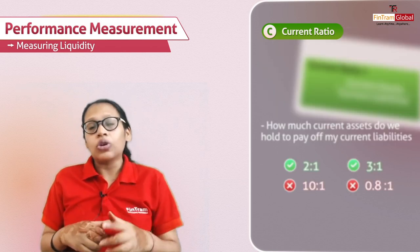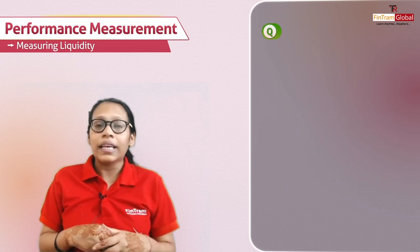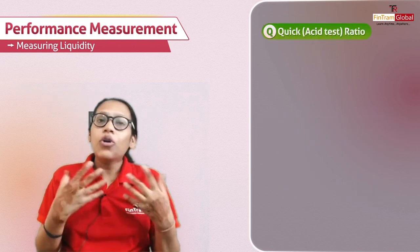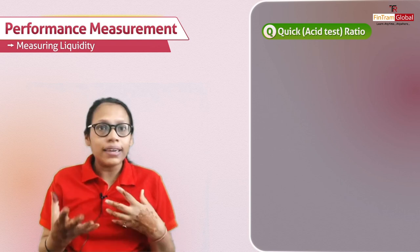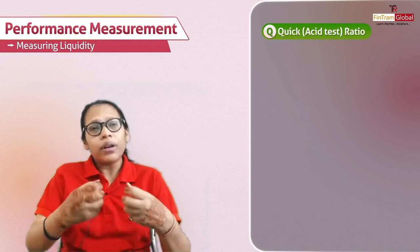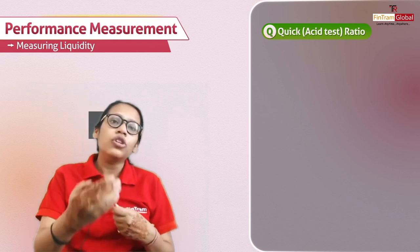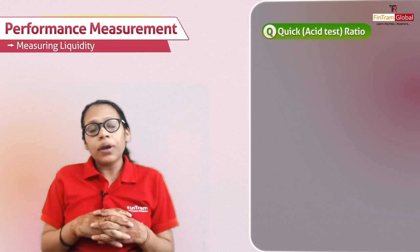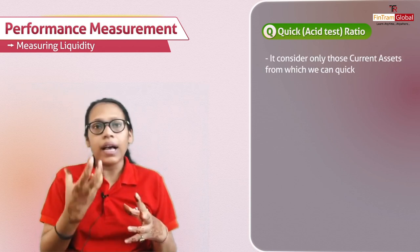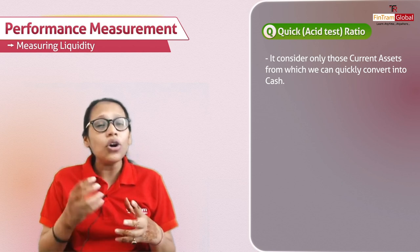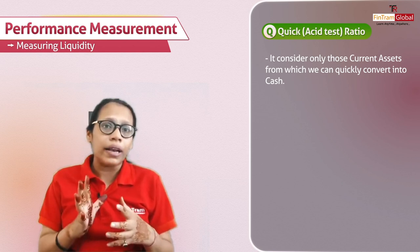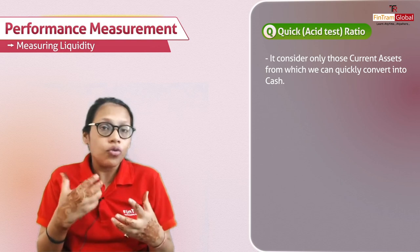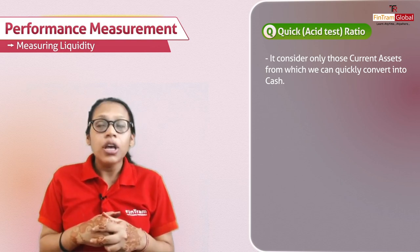That's the first ratio. The second ratio under liquidity ratios is the quick ratio, also called the acid test ratio. This ratio is a little more conservative compared to the current ratio because it only considers those current assets which can quickly be converted into cash.